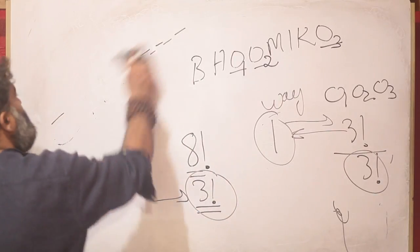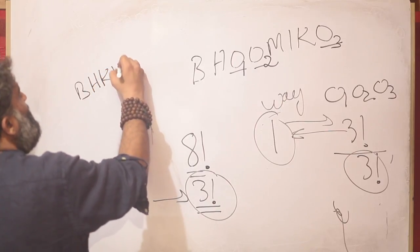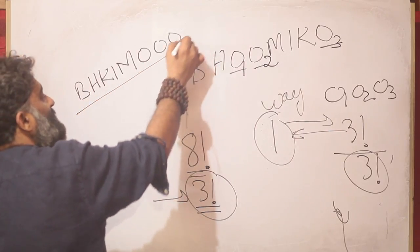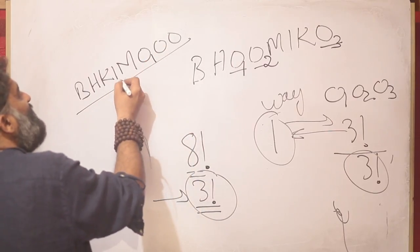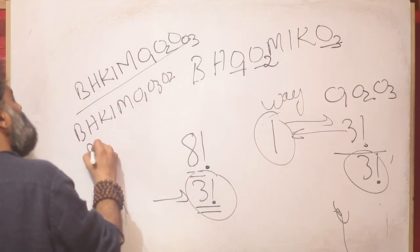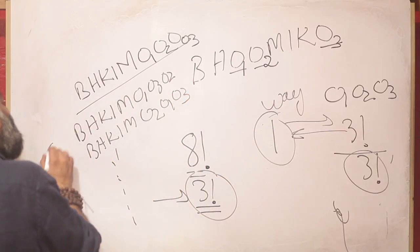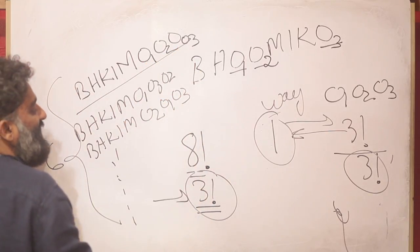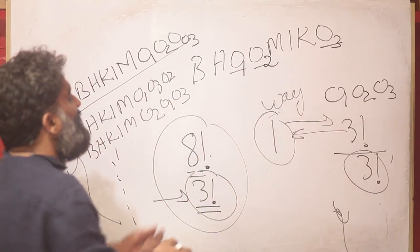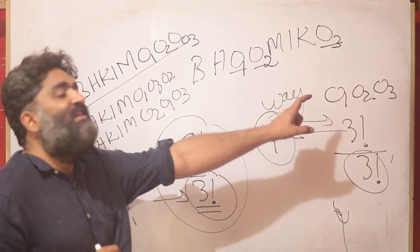To make it concrete: consider the arrangement B-H-K-I-M-O-O-O. In my 8 factorial count I am writing B-H-K-I-M-O1-O2-O3, then B-H-K-I-M-O1-O3-O2, and so on — writing it 6 times because O1-O2-O3 can be rewritten 6 ways. But I did not need to write it 6 times. Therefore I divide my original count by the number of times the repeating scenario was counted — and that number is the factorial of how many times the letter repeats, i.e., 3 factorial. How many times have you counted extra? Divide by that.